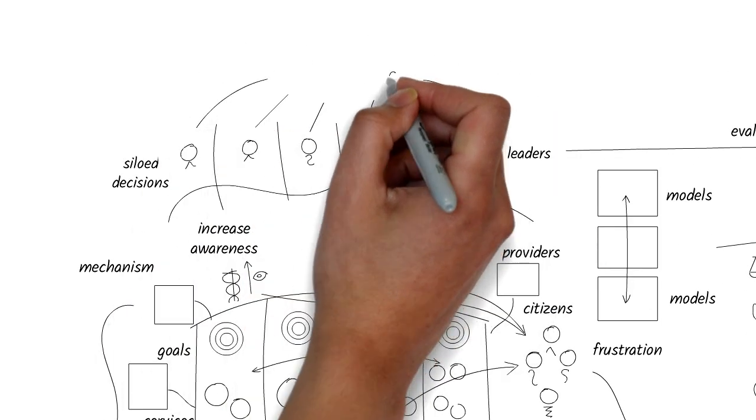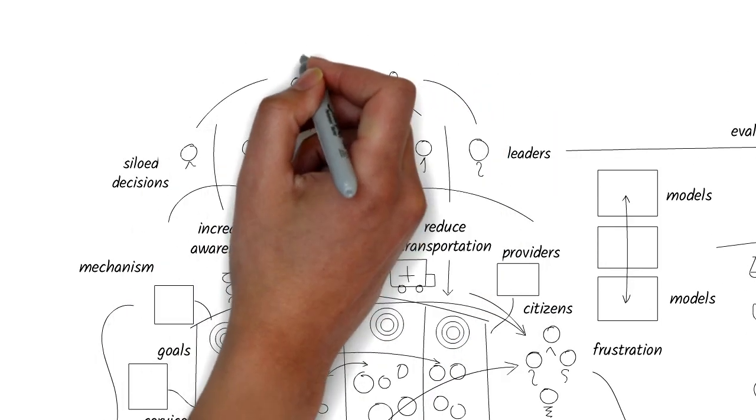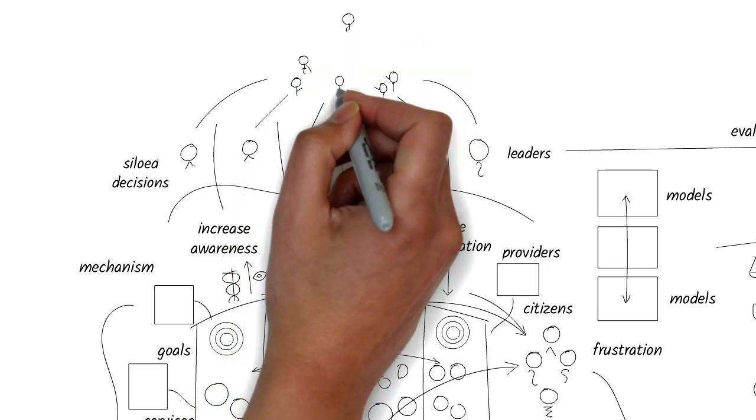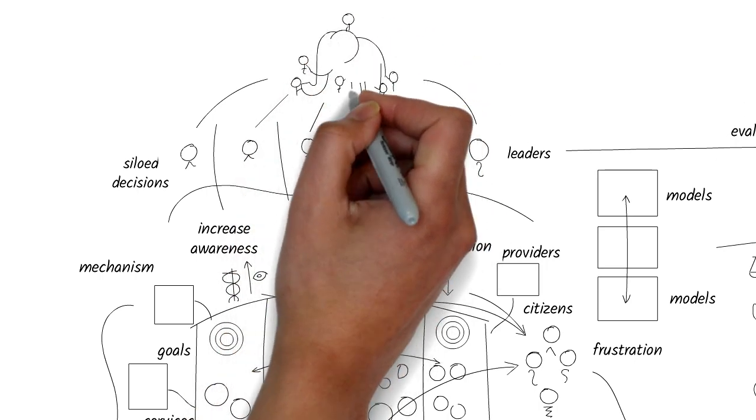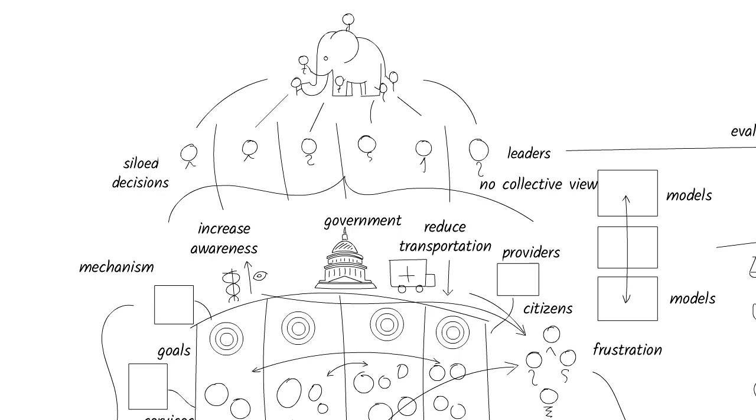In the classic story of blind men and the elephant, each person feels a different part of the elephant and comes to a different conclusion. Individually, each person is right, but only if they have a collective view, can they leverage the strength of the elephant. So, how can they get that collective view?